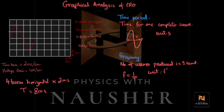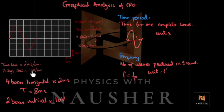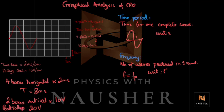They could also ask what is your peak voltage. You can go up or down from the centre. When you look at your peak voltage, how many boxes do you have vertically? You've got 2 boxes vertical. The voltage gain setting is 10 volts per centimeter, meaning 1 centimeter vertically is 10 volts. So 2 boxes vertical multiplied by 10 volts per centimeter gives you 20 volts. That is your peak voltage.